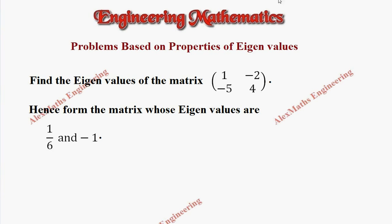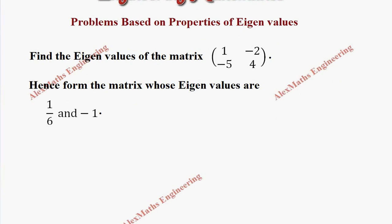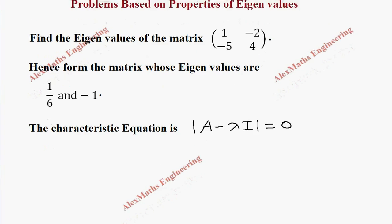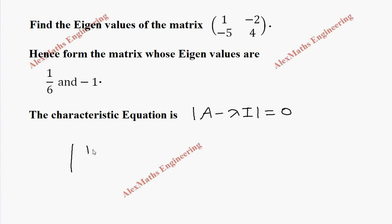First, we have to find the eigenvalues by writing the characteristic equation, which is determinant of A minus lambda I equals 0. Now the determinant: 1 minus lambda, then -2, then -5, then 4 minus lambda, this equals 0.